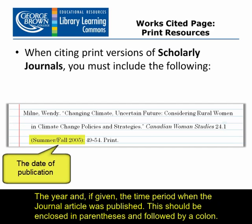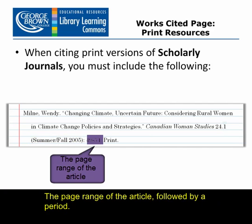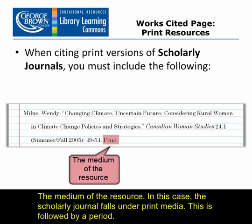The year, and if given the time period when the journal article was published — this should be enclosed in parentheses and followed by a colon. The page range of the article, followed by a period. And the medium of the resource — in this case, the scholarly journal falls under print media, followed by a period.